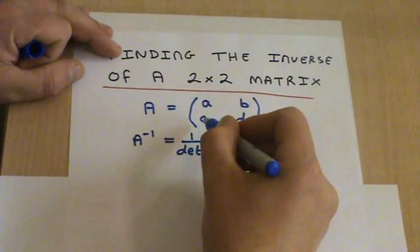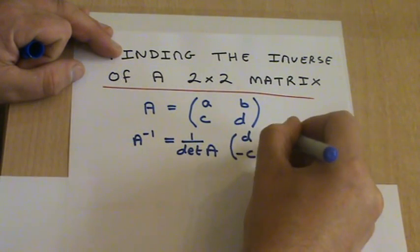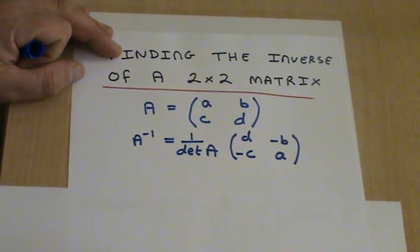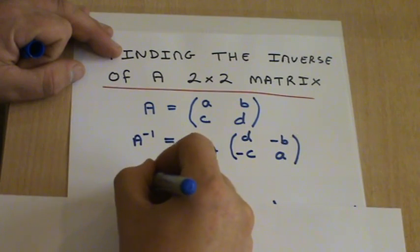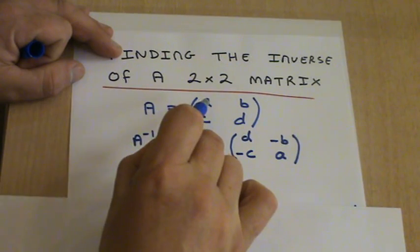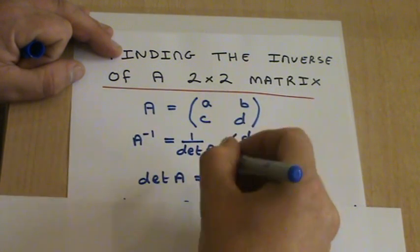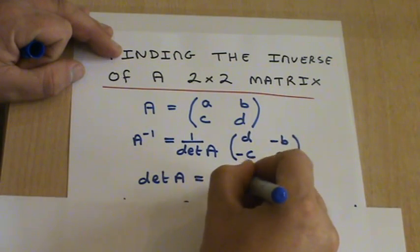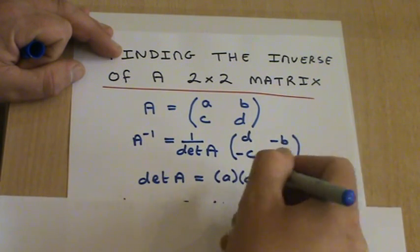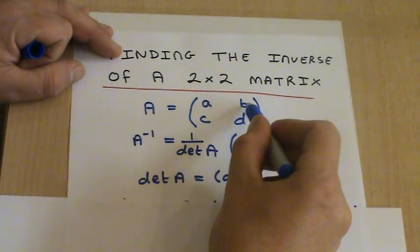Now in the other diagonal, all we do is change the signs. So you're going to have a minus C and a minus B. Now the determinant of A is calculated using the matrix A, and you multiply the two entries in the leading diagonal, so it's A times D, and then you subtract the two entries in the other diagonal, so it's B times C.